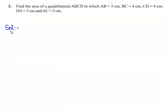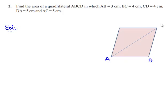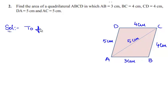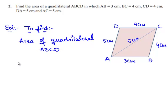Let us move on to the solution. We shall first consider a quadrilateral and name its vertices A, B, C, and D. Given in the question: AB = 3 cm, BC = 4 cm, CD = 4 cm, and AD = 5 cm. Also given, AC = 5 cm, which is the diagonal of the quadrilateral ABCD. The diagonal AC divides the quadrilateral ABCD into two triangles: triangle ABC and triangle ACD.